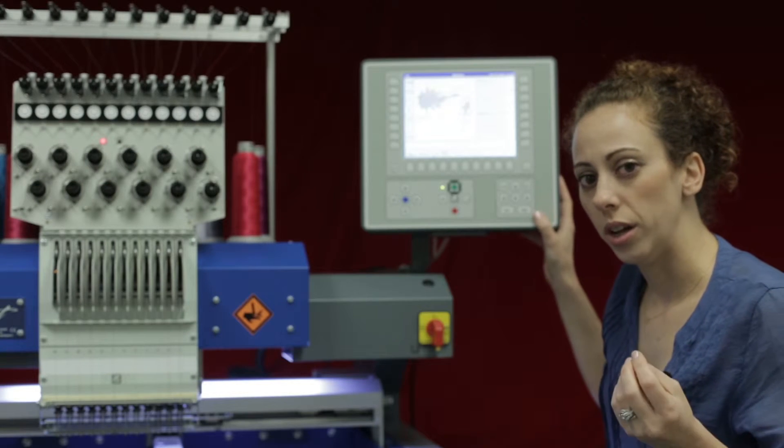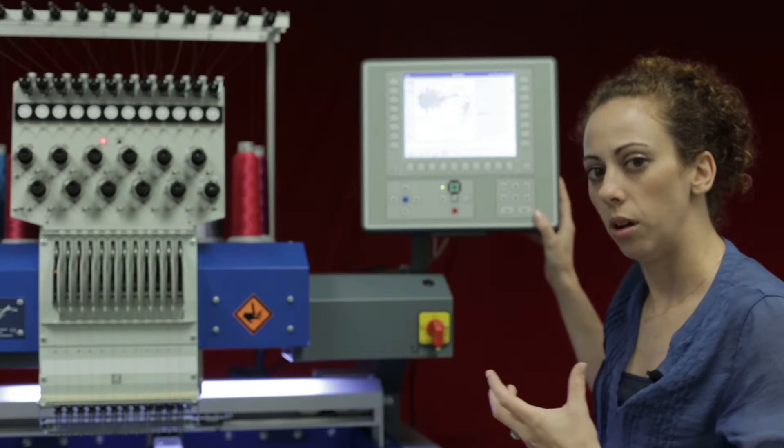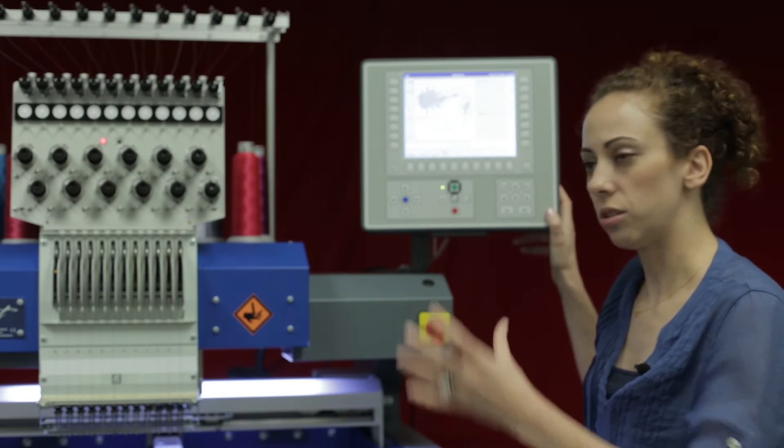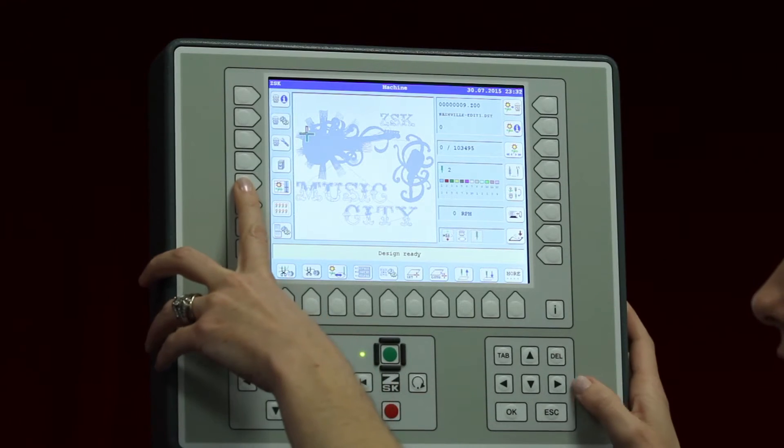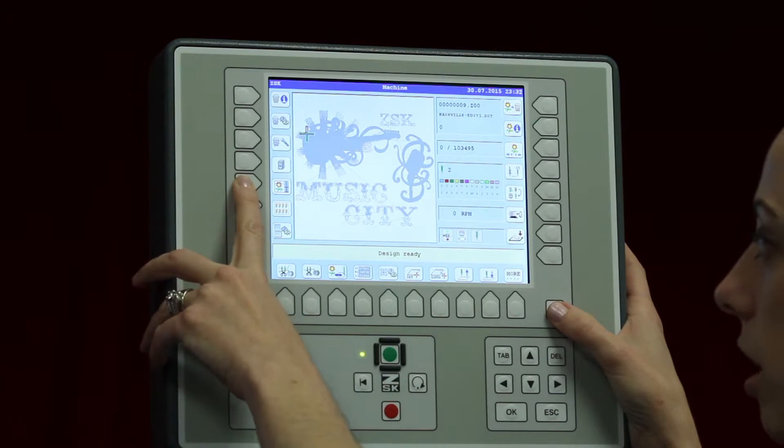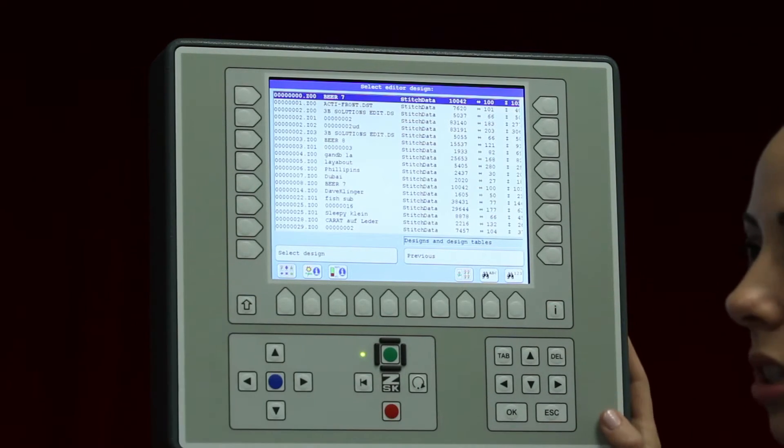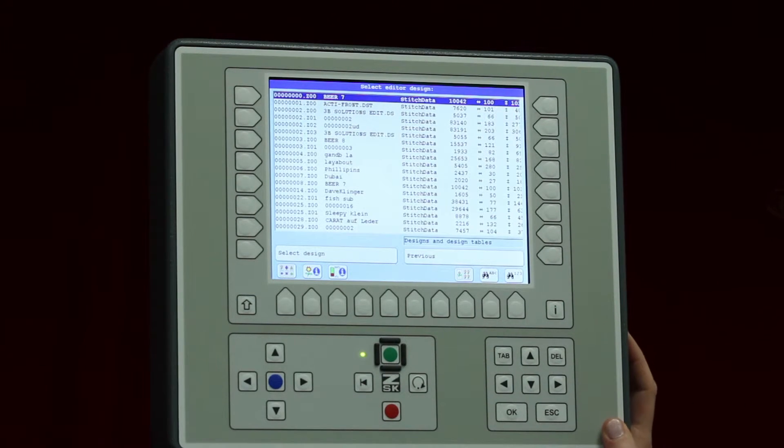Now the other way to do the optimization or the lock stitches within a design that's already in the controller - this is where we would go to the editor. So we go to the editor right here on the left hand side L5 and we choose the design we would like to insert the fixing stitches with.